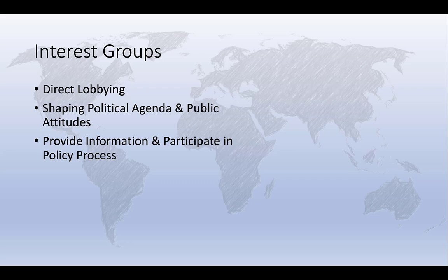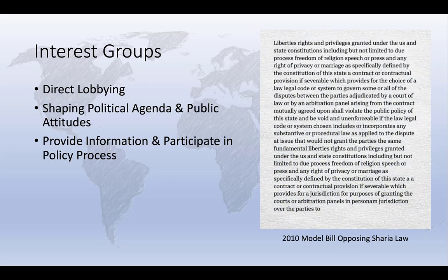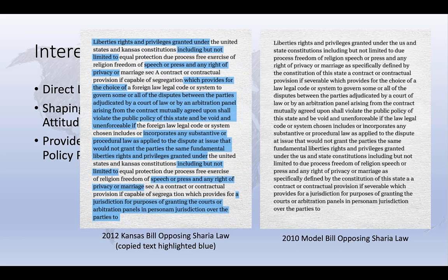An investigation by USA Today found that about 10,000 bills written by interest groups had been introduced into legislatures across the country between 2008 and 2018. These are usually referred to as model bills, and the goal is to get the legislature to adopt as much of the model text as possible. Of the 10,000 model bills introduced over that eight-year period, about 2,100 were actually passed, with about 1,100 of those benefiting specific companies or economic sectors, about 800 supporting conservative causes, and about 150 supporting liberal causes.